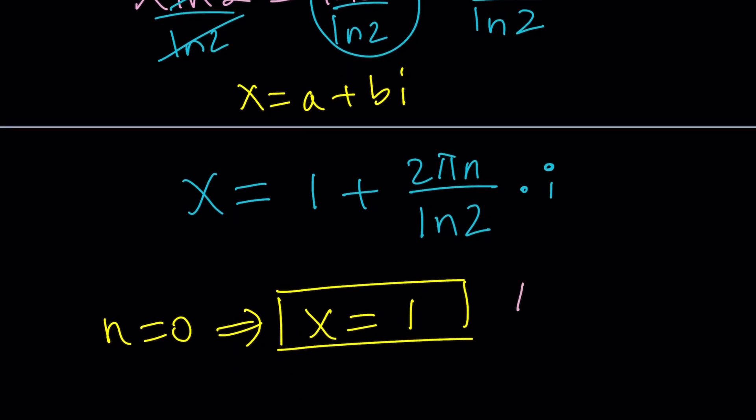When we solve this equation, we set the exponents equal to each other because the bases were the same. And then from there, we got x equals 1. You remember that?